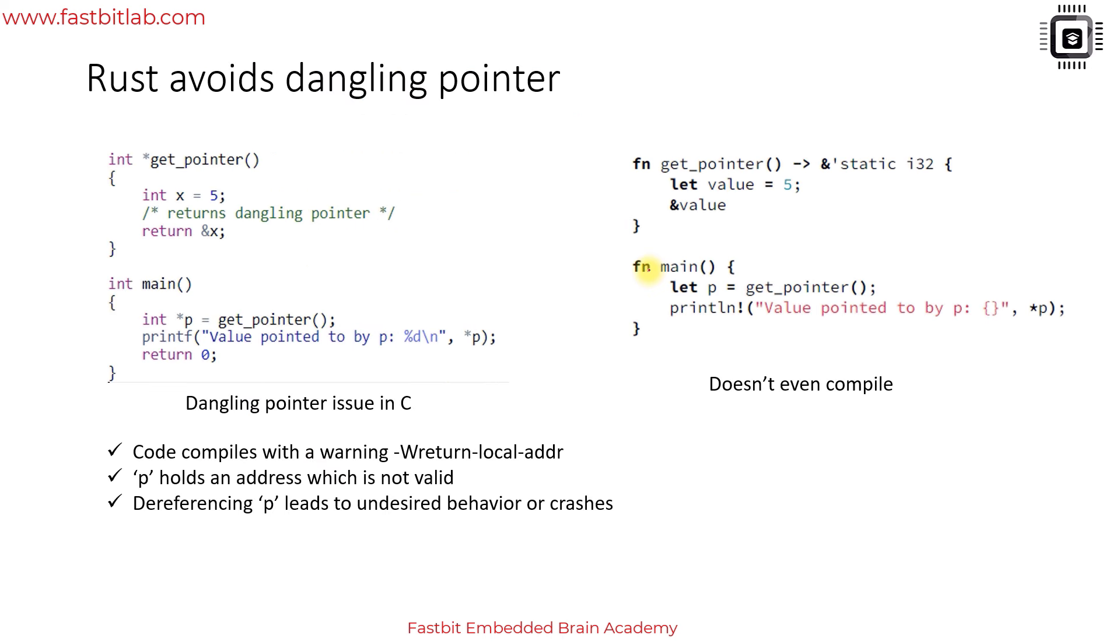Rust also avoids dangling pointers. Let's see one example in C. In C we often see this issue. Here is a C code where we try to initialize this pointer variable p and it calls get pointer function.